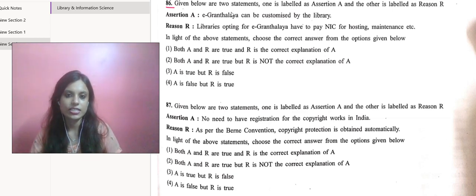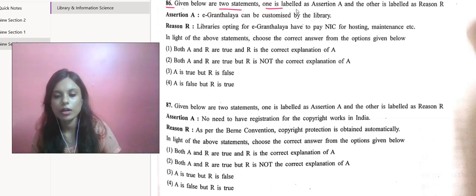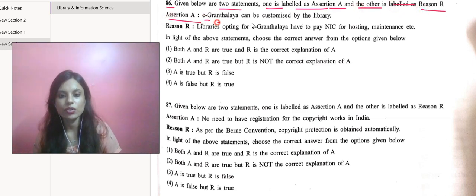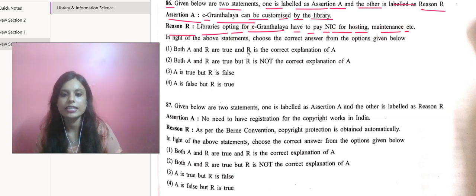Coming back to the question - that's the main purpose of this discussion. Given below are two statements labeled as Assertion A and Reason R. Assertion A says e-Granthalaya can be customized by the library. Reason R says libraries opting for e-Granthalaya have to pay NIC for hosting, maintenance, etc. In light of the above statements, choose the correct answer from the options given below.